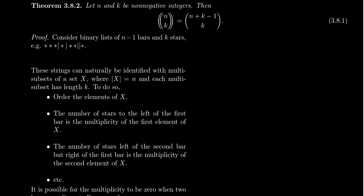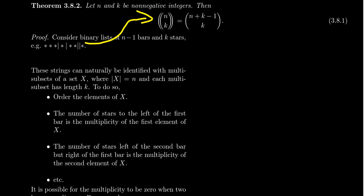I claim that counting the number of star-bar strings is the same thing as counting multi-subsets, and also the same as counting subsets — that is, the binomial coefficient will come into play. These strings can naturally be identified with a multi-subset of the set X, where X has cardinality n and the multi-subsets we are choosing each have length k.